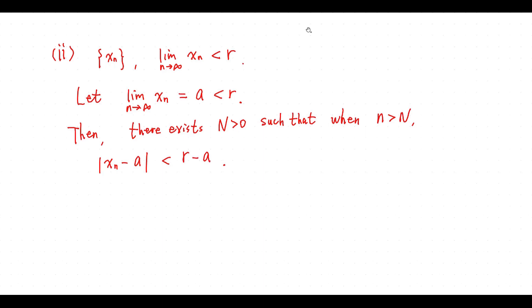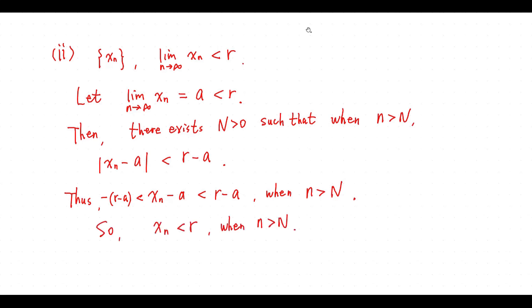When n is greater than big N, we have the required inequality. So x_n is less than r when n is greater than big N.